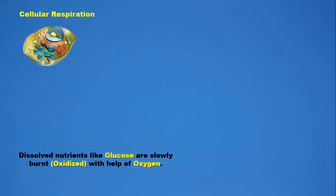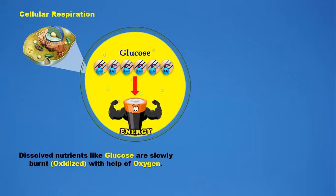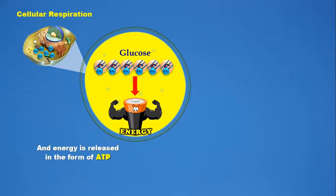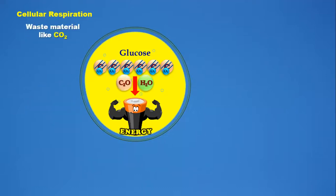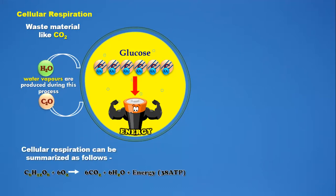Then comes cellular respiration, which happens inside the cells. Dissolved nutrients like glucose are slowly burned or oxidized with the help of oxygen. When oxygen enters the glucose it gets oxidized; when oxygen goes out it is reduced. Because of this oxidation of glucose, energy is released in the form of ATP — adenosine triphosphate. Waste material produced is carbon dioxide, and water vapors are also produced. This process can be summarized as a chemical equation — it is better if you write this down.